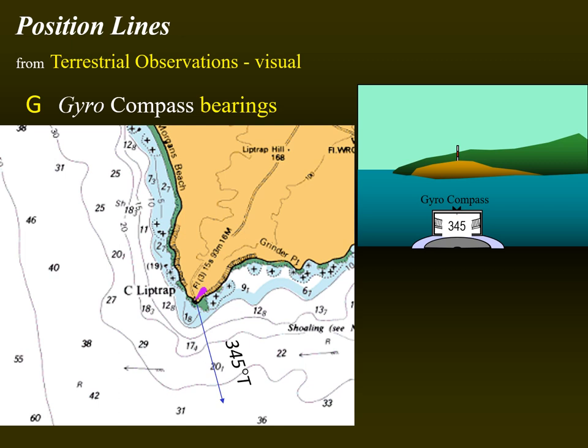In this case, the bearing is about 345 degrees. With the bearing of the lighthouse obtained as 345 degrees, we know that we are somewhere along the line of bearing looking towards the lighthouse. To plot the position line on the chart, we lay off a line of bearing — in this case 345 degrees true — leading towards the symbol of the lighthouse. Note that the arrowhead on this position line points away from the lighthouse, as we are somewhere along the line away from it.